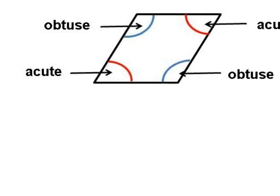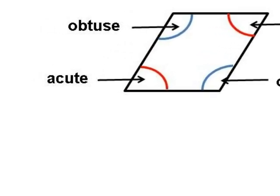A rhombus that is not a square has two acute and two obtuse angles.